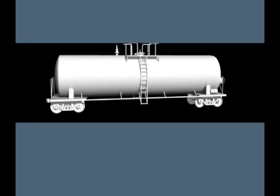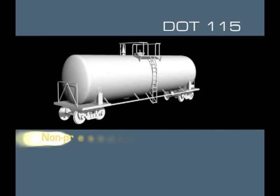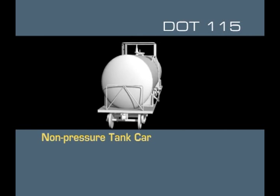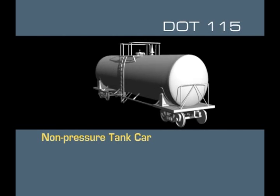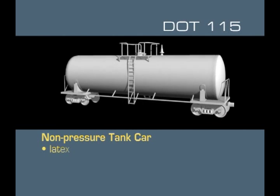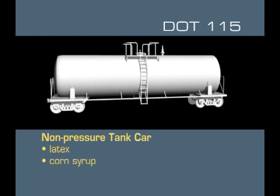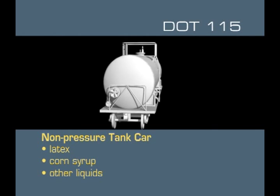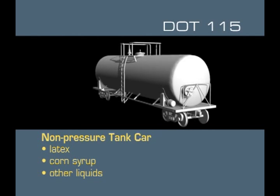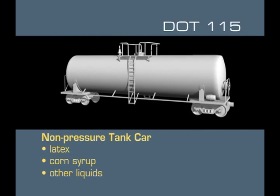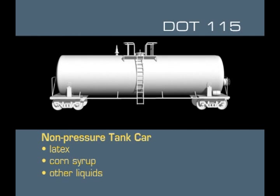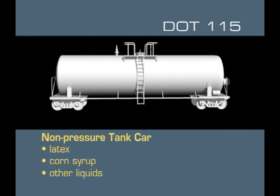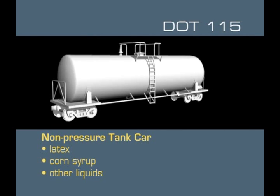The last non-pressure tank car you need to recognize is the DOT-115, which carries latex, corn syrup, and other liquids. It has a similar silhouette to the other non-pressure tank cars.